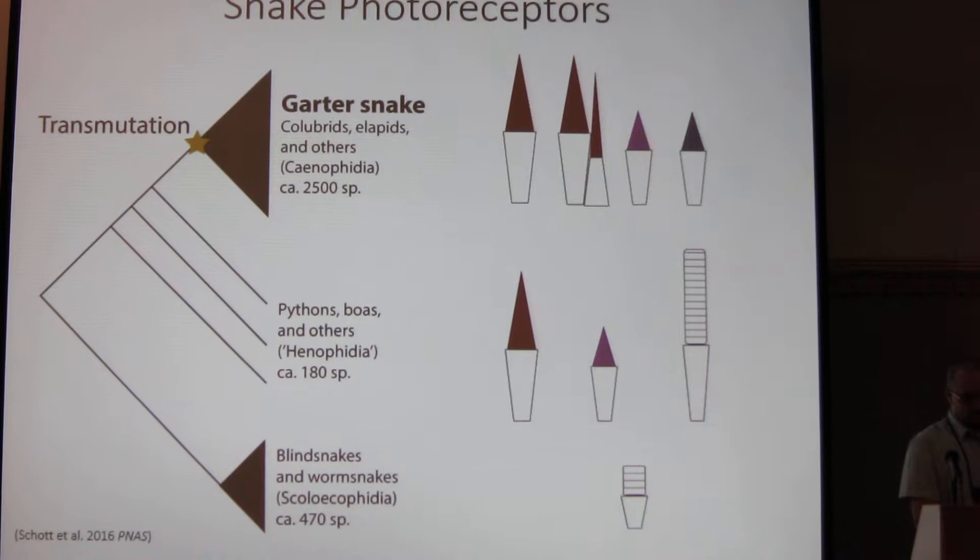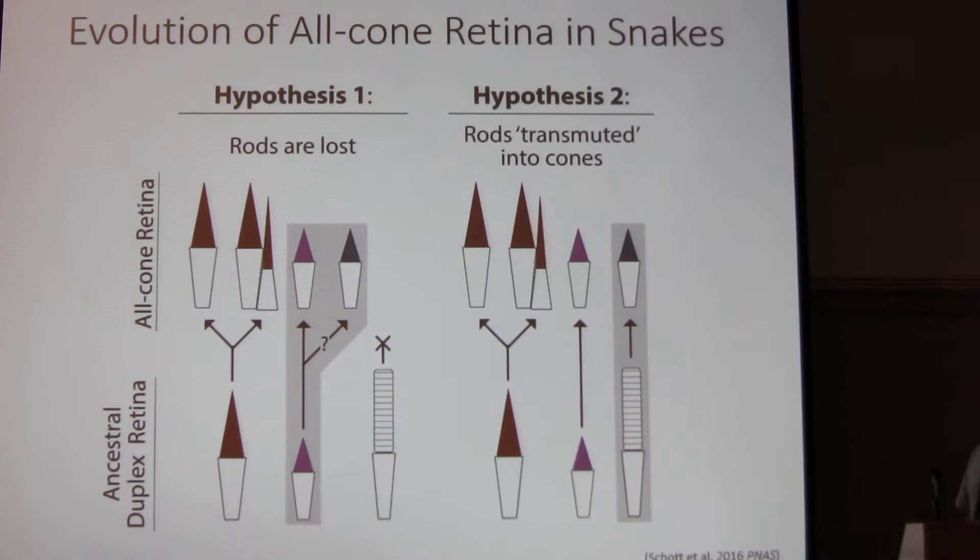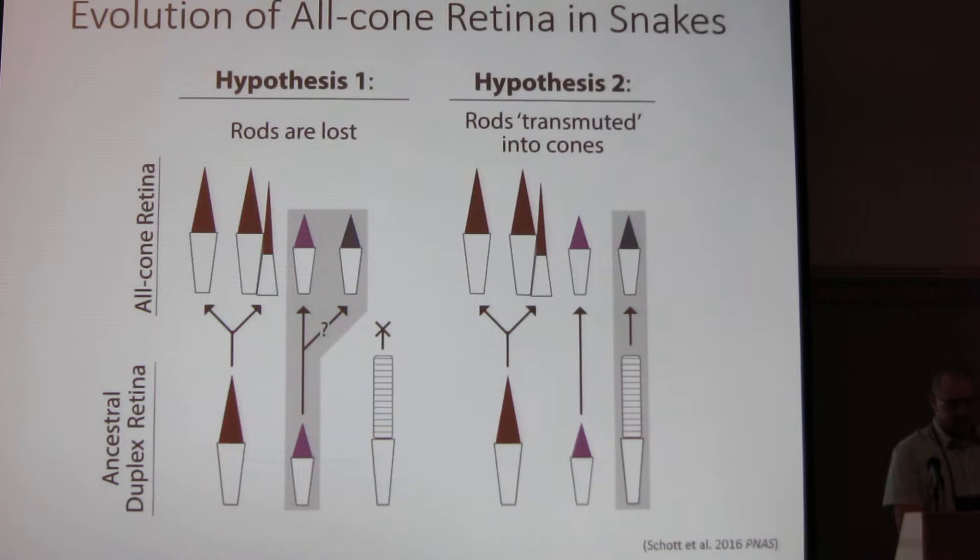We can form two main hypotheses to test this. The first being that this small cone diverged into two separate cones and we lost the rod, or the rod photoreceptor was transformed into a cone.